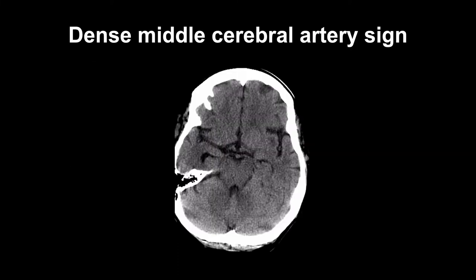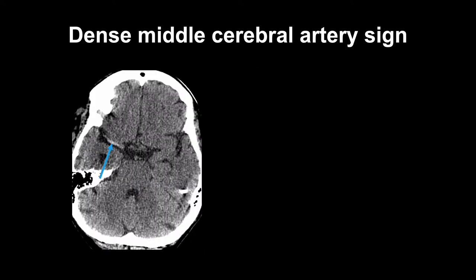On this scan of a patient with an acute left-sided hemiparesis, the right middle cerebral artery appeared to have slightly higher attenuation than the left. This image is a standard 5 mm thick reconstruction of the patient's CT scan data.